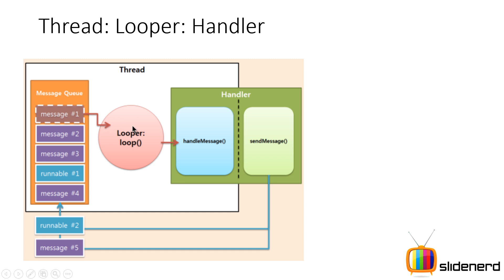The Looper is like a person sitting at an office desk. All the messages come one by one to the Looper, and the Looper will try to figure out what to do with them. What the Looper actually does is take the message and give it to this person called the Handler. The Handler has a method called 'handleMessage' where the code inside the message will be executed. The Handler does two things: it can handle messages for that thread, and it can also send messages into the message queue.